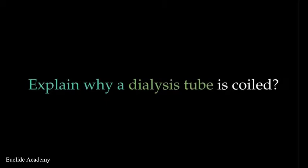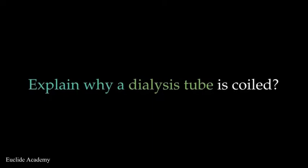Let us answer the questions we had. The first one was: explain why a dialysis tube is curled. The coiling of the dialysis tube is to enable the transfer of materials in the fluid into the tube, while water diffuses out of the tube. It enables materials like urea from a concentrated solution to diffuse into the tube.